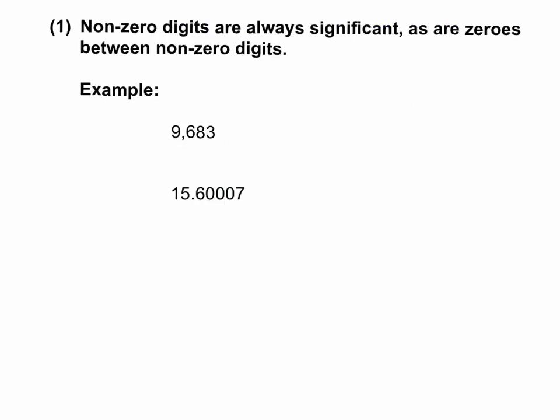Rule number one: when in a measurement, any non-zero digit is always significant, as well as zeros between non-zero digits. So what that means is that any number that shows up that is not zero was a measured or estimated digit. In addition, any zeros or sandwich zeros found in between are also counted as significant figures.